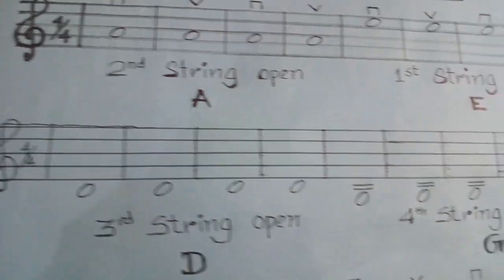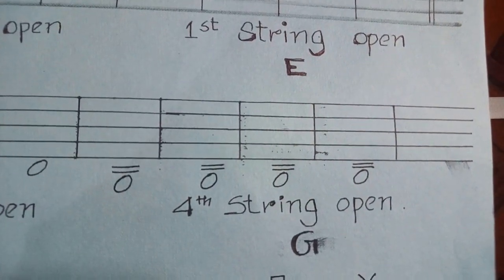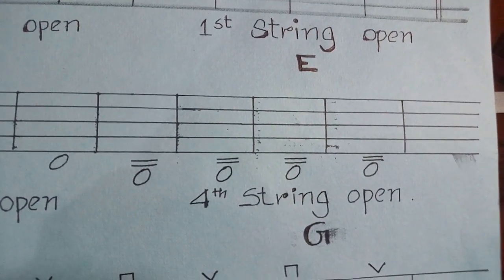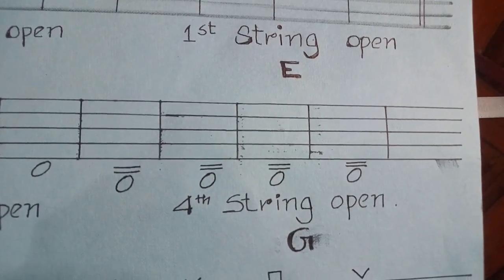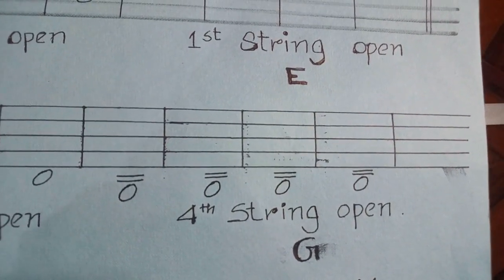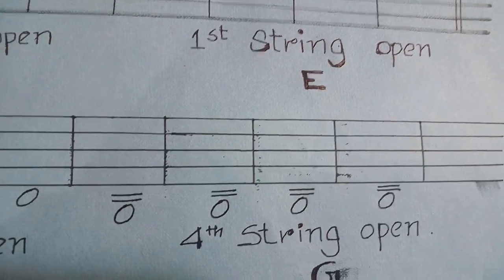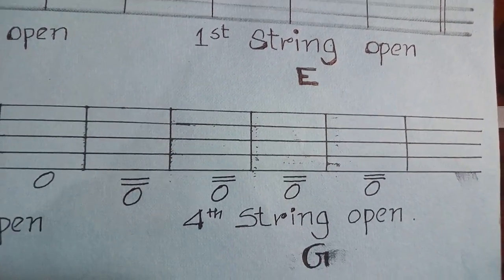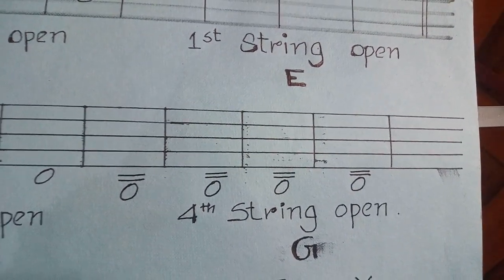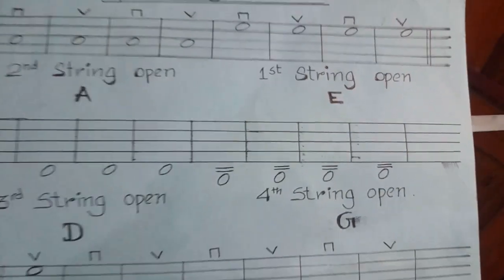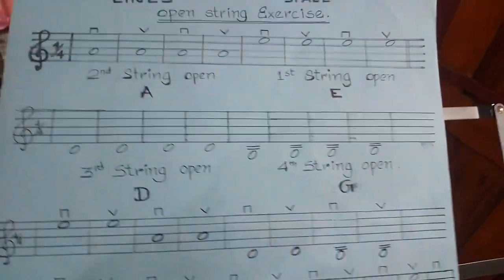The fourth string is called G. This is the G in the note. The third string is D. The second string is A. This is G in the note. The strings are: second string, first string, third string, and fourth string.